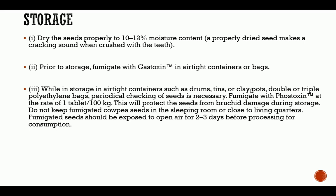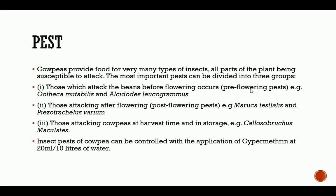Cowpeas provide food for very many types of insects, with all parts of the plant being susceptible to attack. The most important pests can be divided into three groups: those which attack the beans before flowering occurs (pre-flowering pests); those attacking after flowering; and those attacking cowpeas at harvest time and continuing as store pests. It is important to note these distinctions.